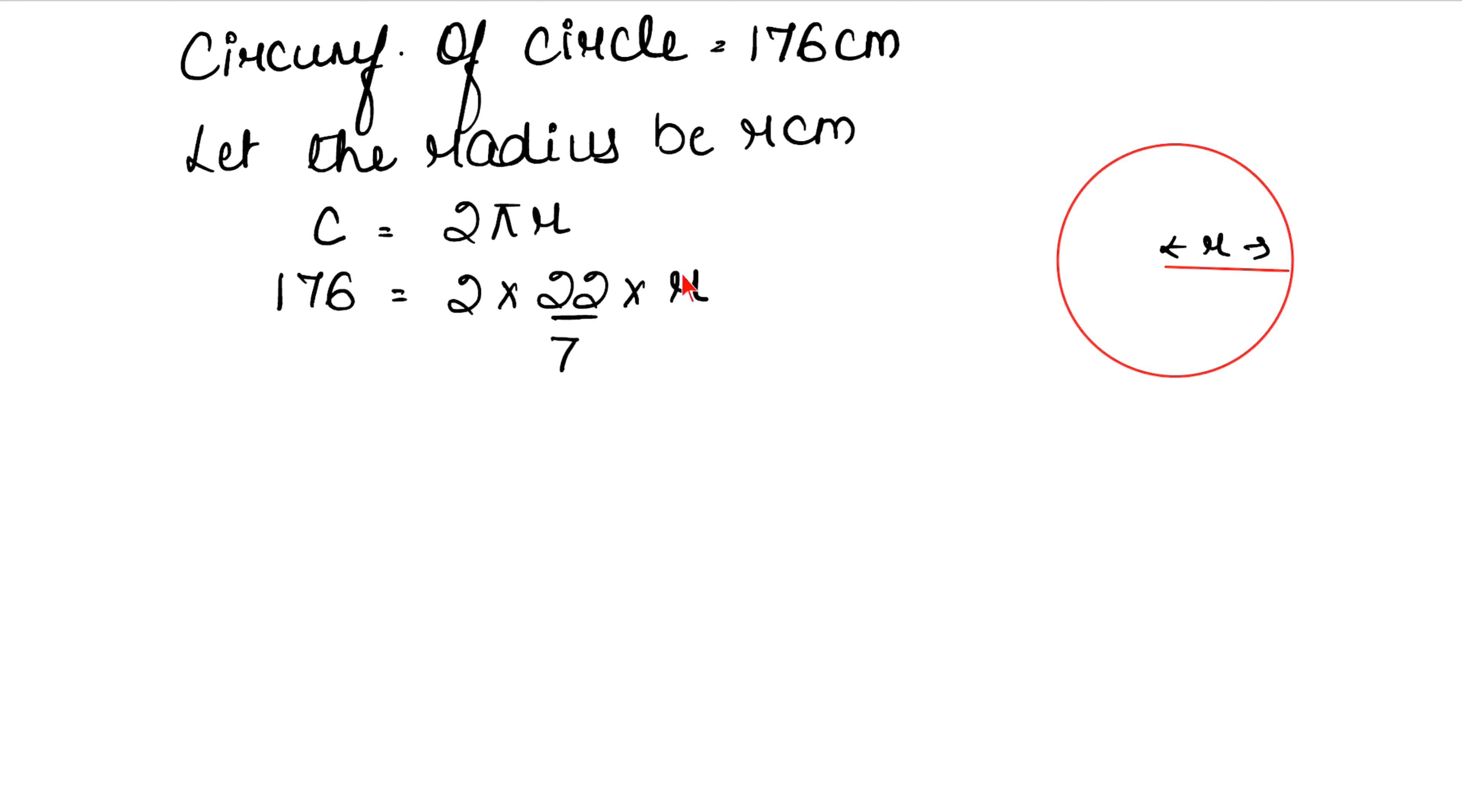There will be a variable here, but constant values here. We need to isolate r. So, 176 divided by 2, divided by 22/7, equals r. You can write r equals to...